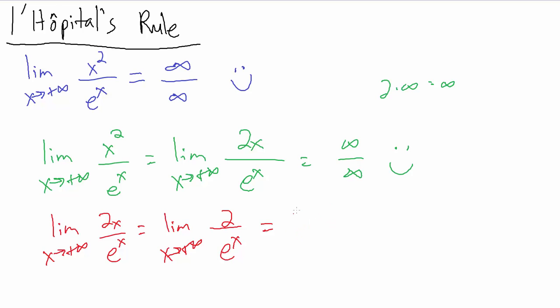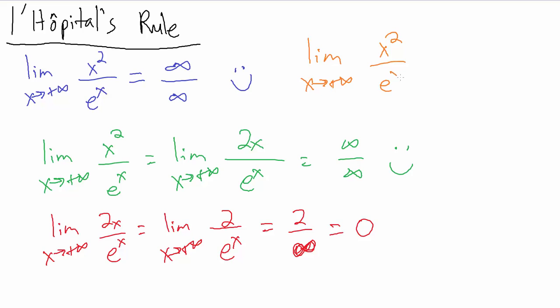Why is that valid? Because the bottom is getting infinitely large while the top remains a constant. We have a constant value divided by something that grows without bound. As x gets larger and larger, e to the x also gets larger and larger, so 2 divided by e to the x gets smaller and smaller and eventually becomes 0. So using L'Hôpital's rule, the limit as x goes to positive infinity of x squared divided by e to the x equals 0.